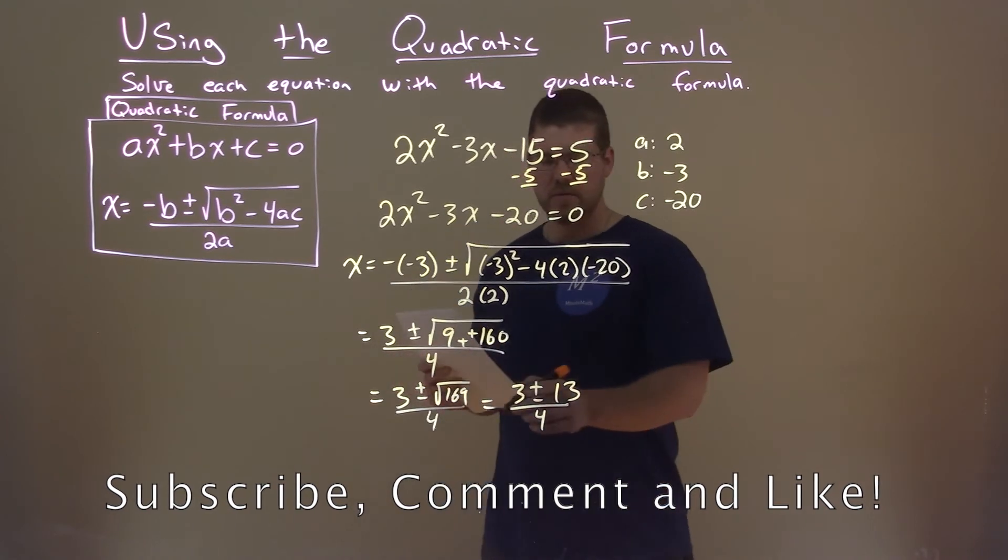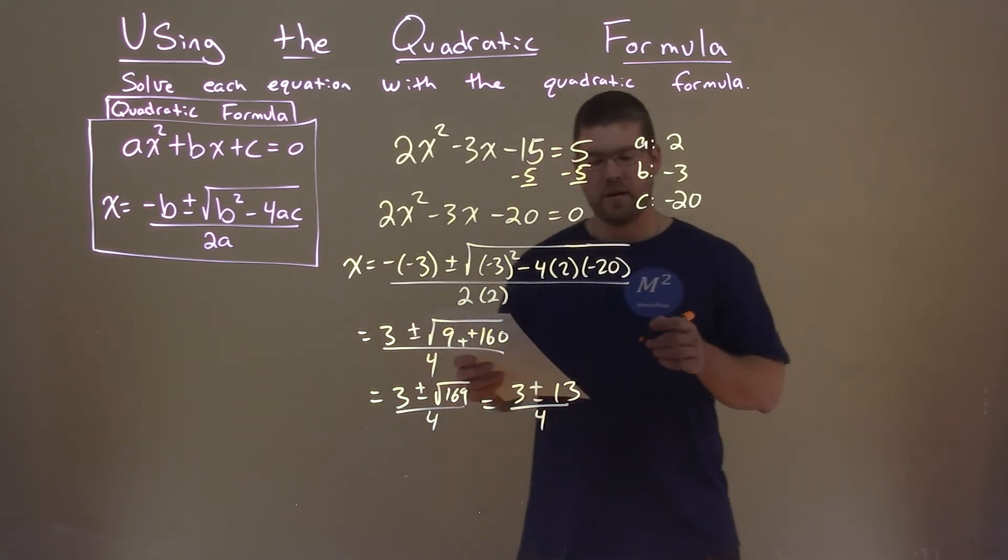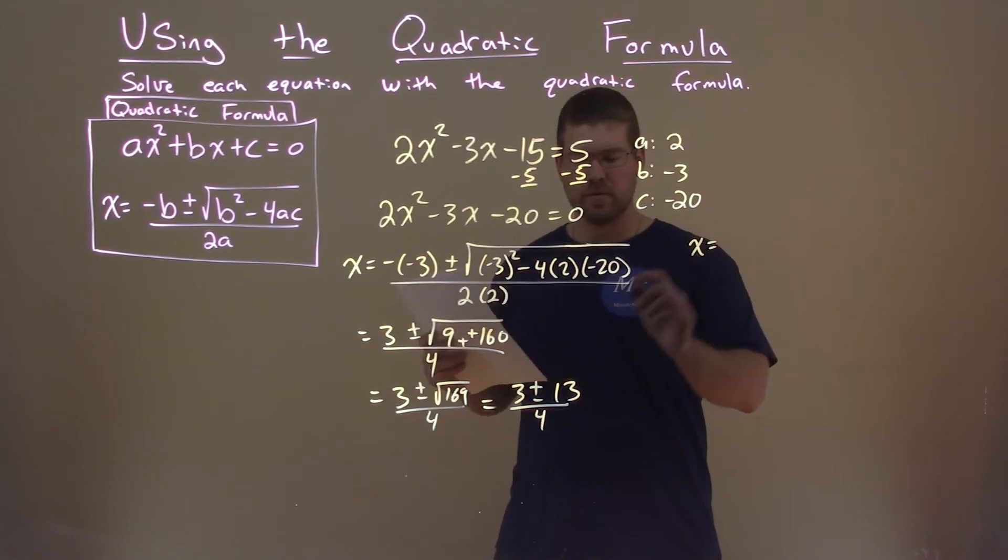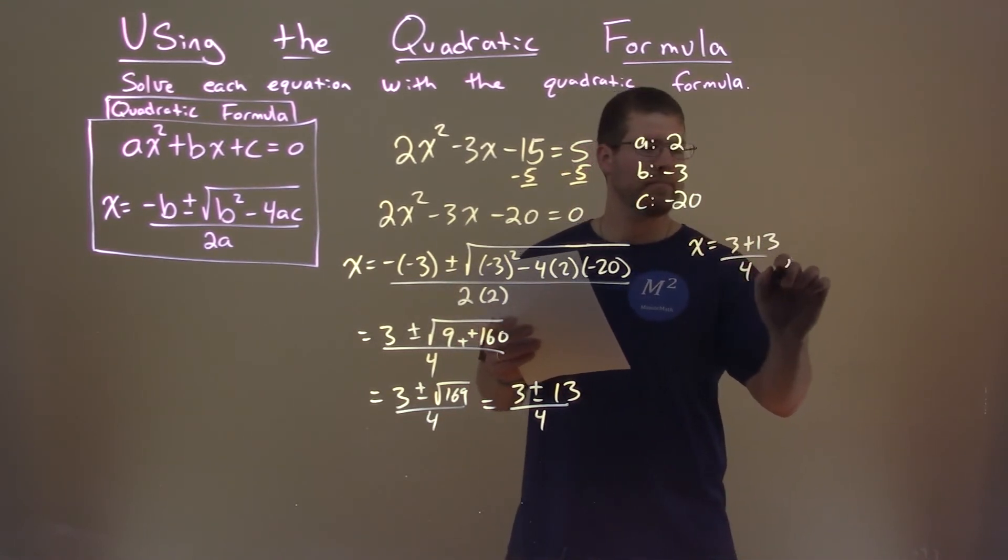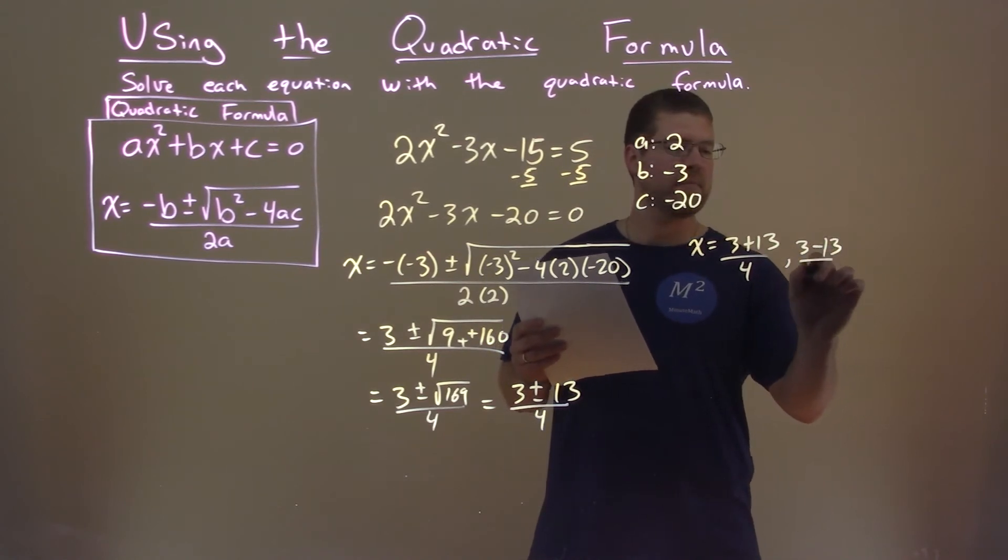So with that information, we have 3 plus or minus 13 over 4. We can say x equals, we'll break them up to be 3 plus 13 over 4, and 3 minus 13 over 4.